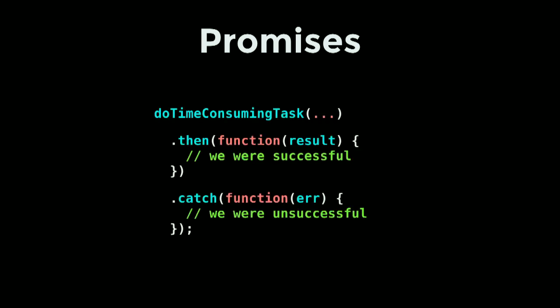Much of what we do here is asynchronous — things that can take a long time to complete — and a lot of APIs use promises for this. They can be a little hard to get your head around at first. We ask a question that will take some time to answer, and we get back a promise that it will be answered. The promise will either resolve, in which case the 'then' block runs, or it will reject and we get the error handler.